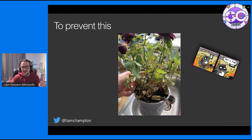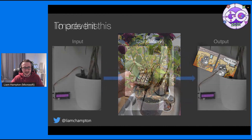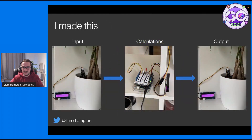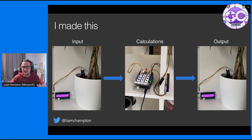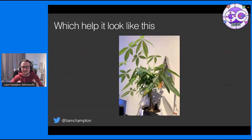So to prevent my lovely houseplants looking like the dead one on screen, I created a soil moisture sensor. It takes an input from the plant itself, passes it to the Arduino, does some calculations, and then spits out some human-readable output for me that essentially tells me I need to water my plant when it's getting thirsty. And it helps my plant look healthy — it's growing quite nicely behind me.